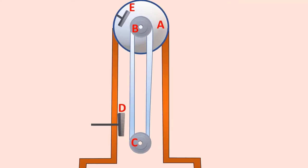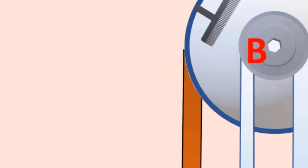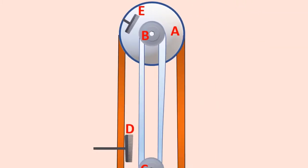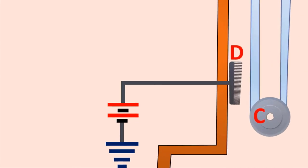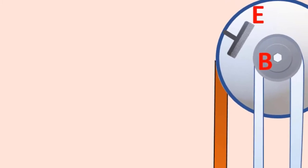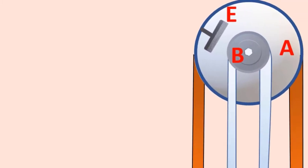Two comb-shaped metallic conductors D and E are fixed near the pulleys. The lower comb D is maintained at a positive potential of 10^4 volts by a power supply. The upper comb is connected to the inner side of the hollow metallic sphere.